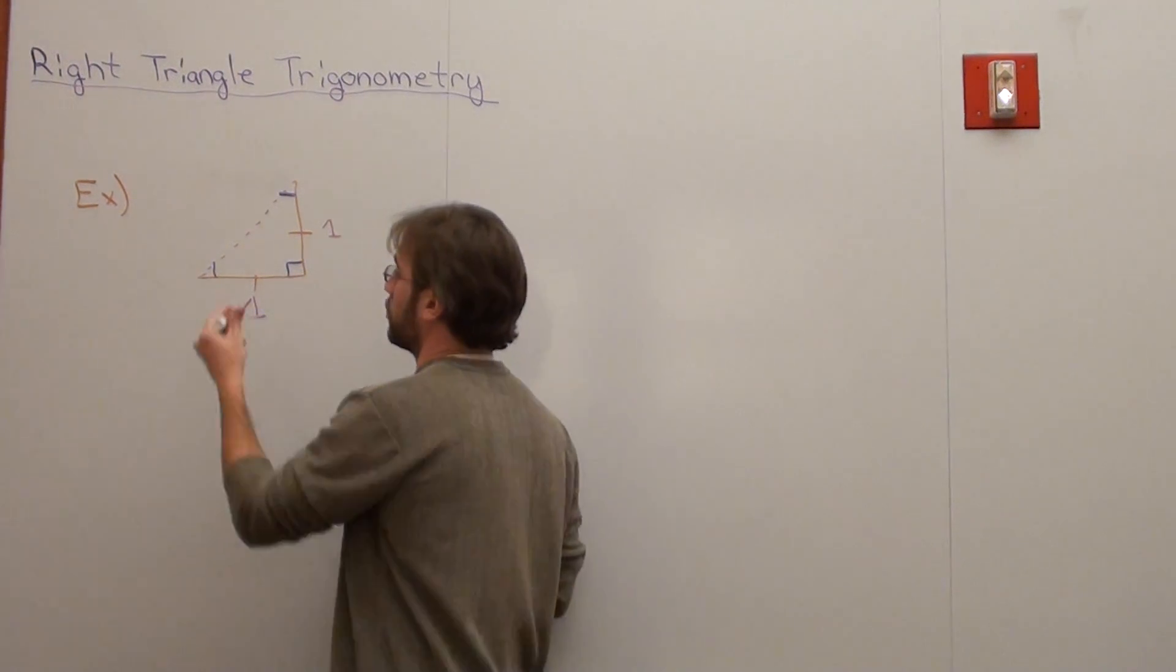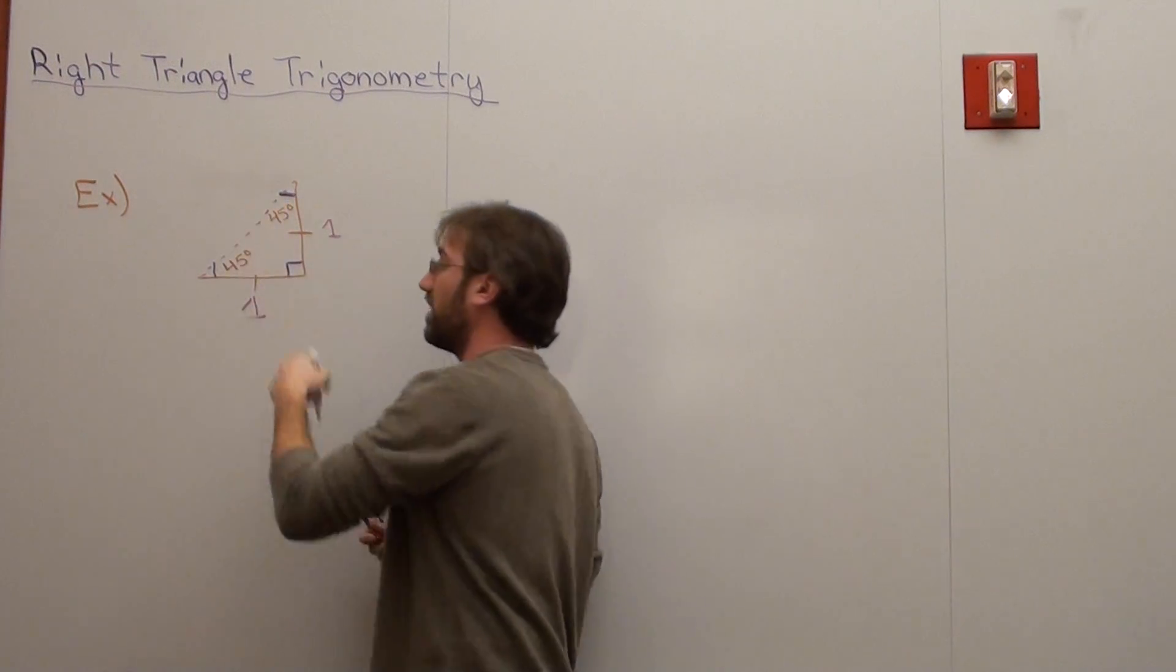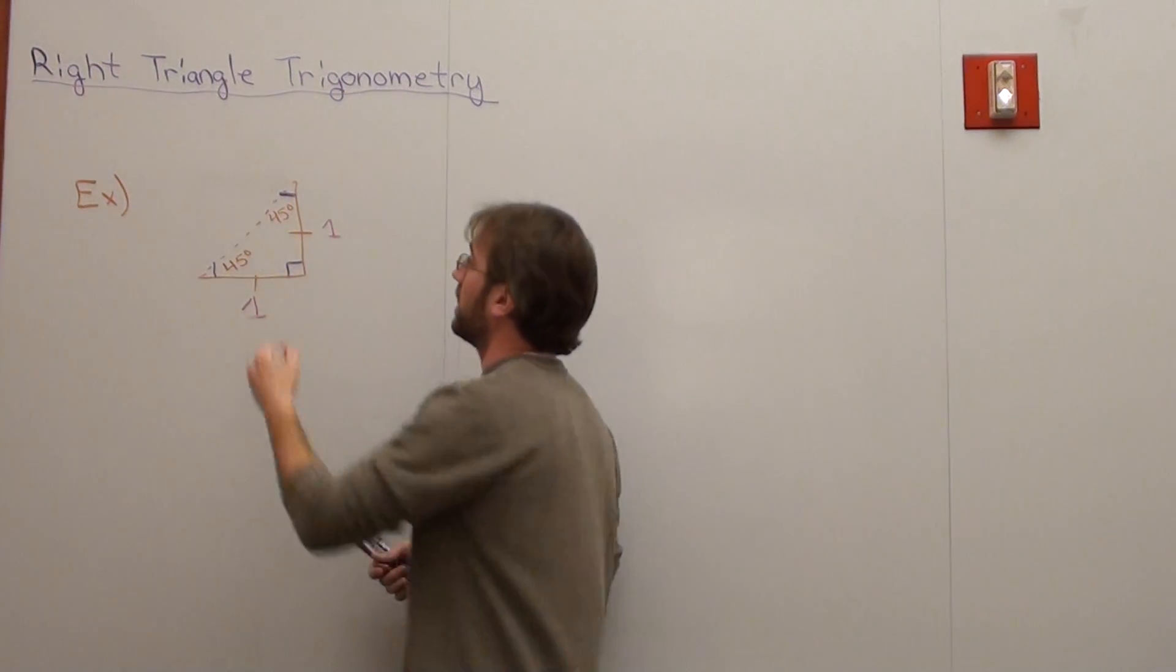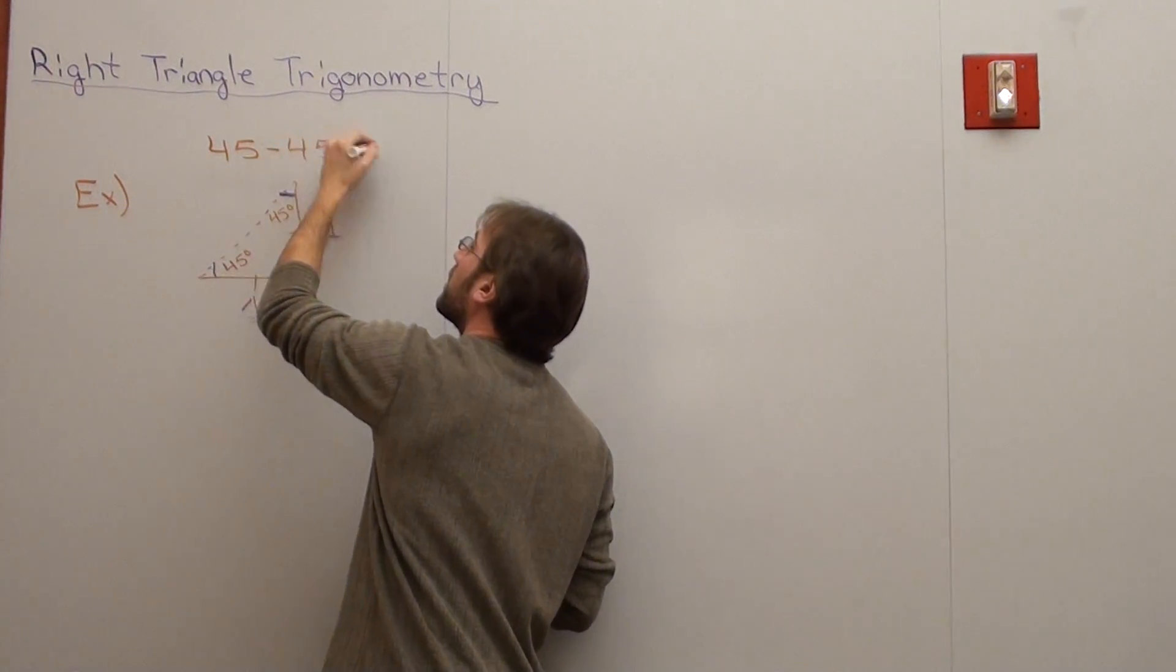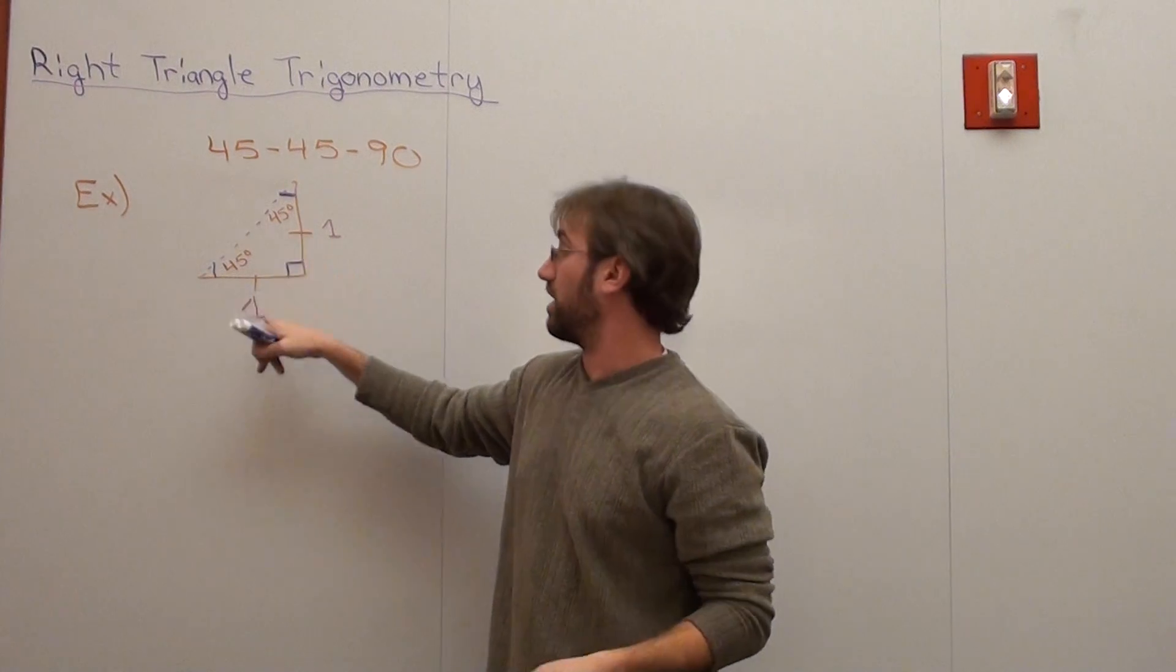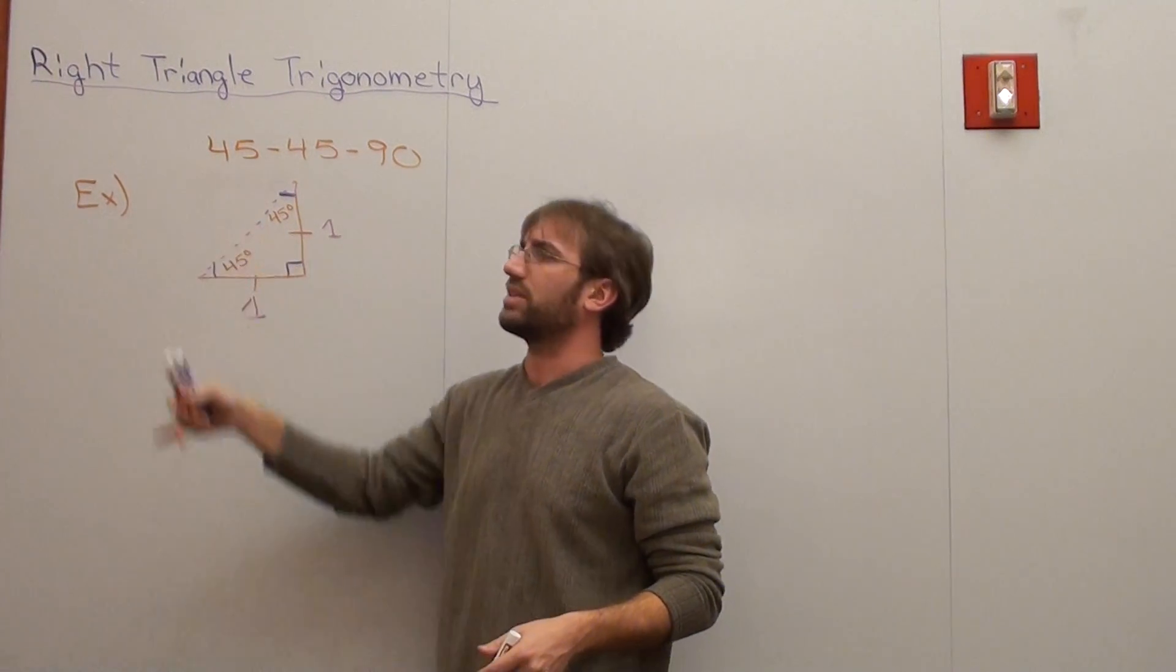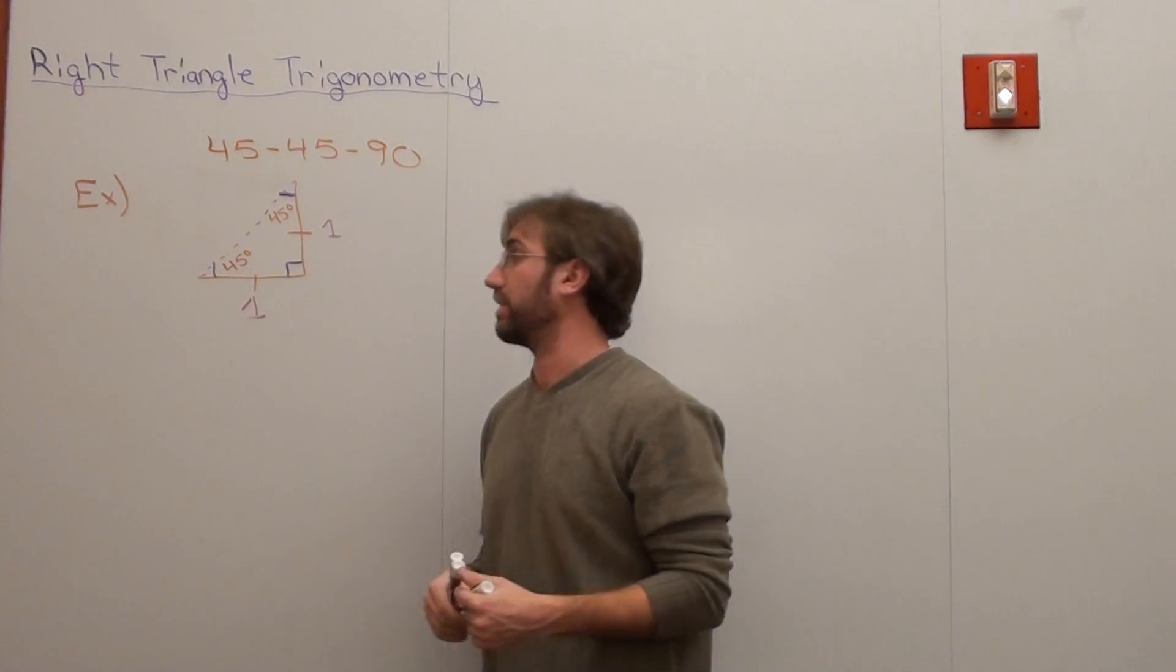So I've got this triangle. That's a 45-45-90 triangle. And I'm going to note it like this, where one of the legs is one, the other leg is one. And now I want to figure out the hypotenuse of this triangle. So how do I do that? I use the Pythagorean theorem.